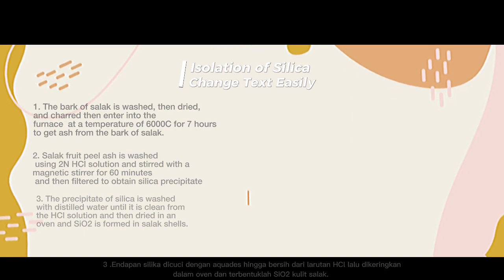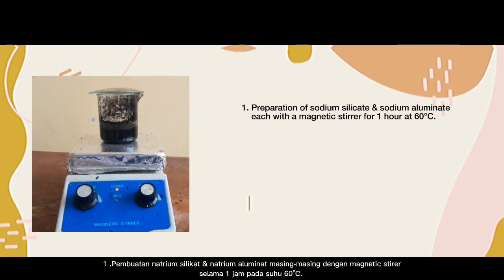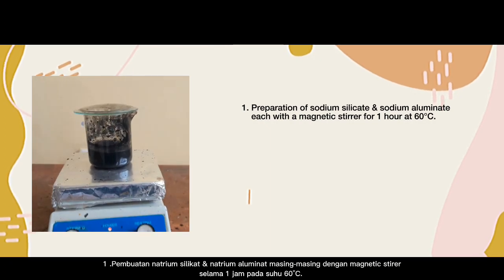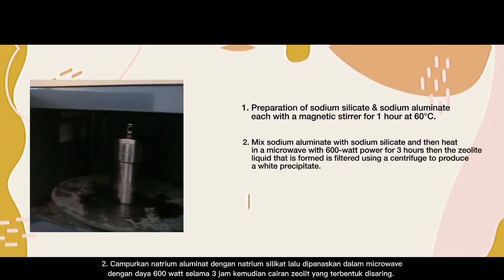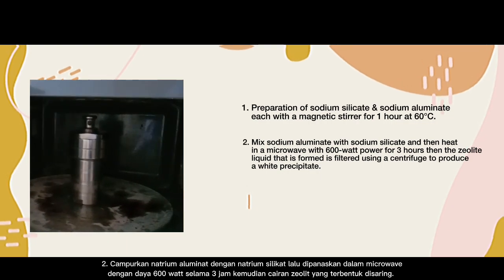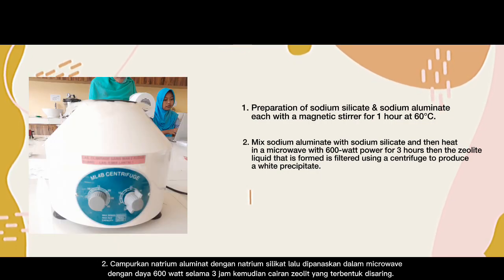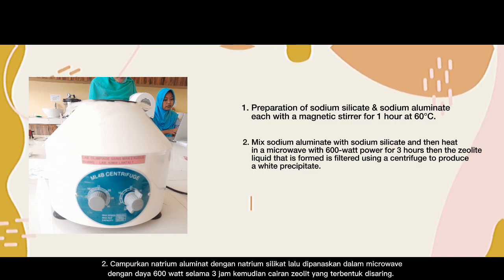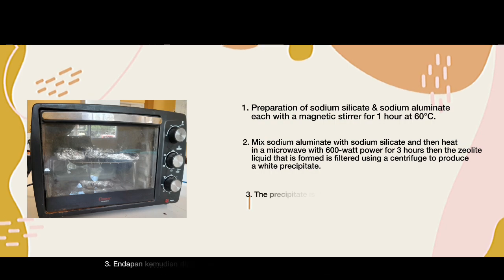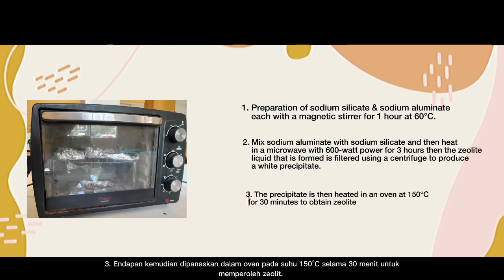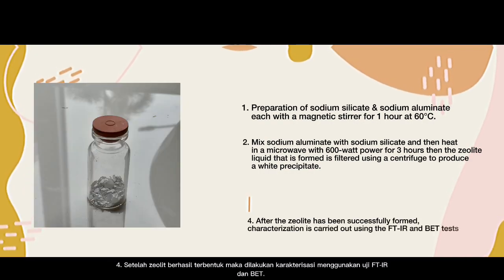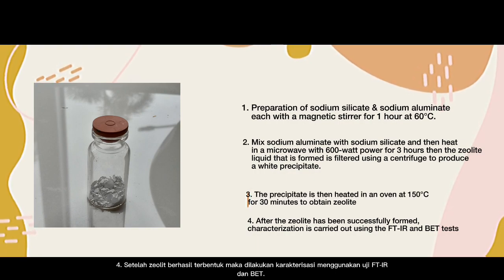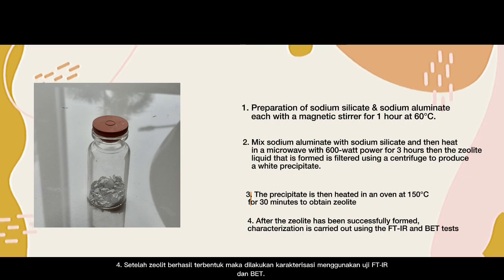Step 3: The silica precipitate is washed with distilled water until clean of the HCl solution, then dried in an oven, yielding silica oxide from salak shells. To make synthetic zeolite, the first step is preparation of sodium silicate and sodium aluminate, each stirred with a magnetic stirrer for 1 hour at 60 degrees Celsius. Second, mix sodium aluminate with sodium silicate and heat in a microwave at 600 W for 3 hours. The zeolite liquid formed is filtered using a centrifuge to produce a white precipitate. Third, the precipitate is heated in an oven at 150 degrees Celsius for 30 minutes to obtain zeolite. After zeolite is successfully formed, characterization is carried out using FTIR and BET tests.